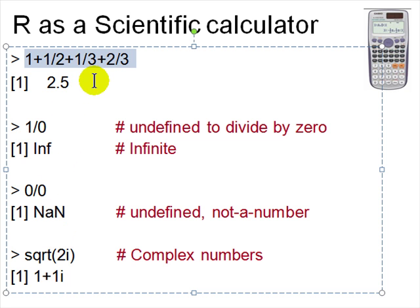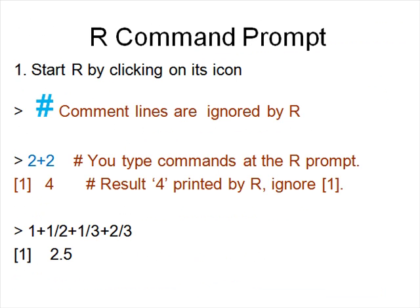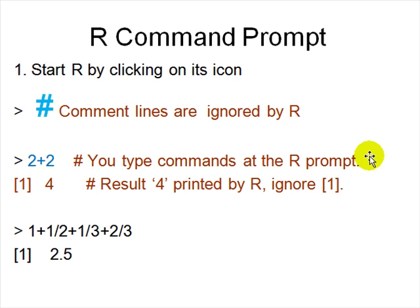You start R by clicking the icon. Anything starting with a hash '#' symbol is a comment — R ignores everything from hash to end of line. You should use hash comments to explain what you're doing, because R is a very cryptic, condensed language. For example, '2 + 2' — this is a comment — and the result is 4. The [1] means 4 is a vector of size 1. Similarly, typing 1/2 gives 0.5.